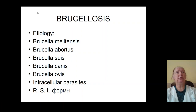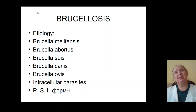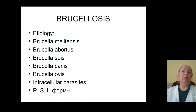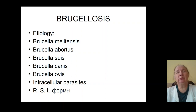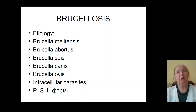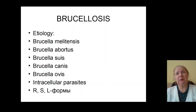Good afternoon, colleagues. The lecture today is about Brucellosis. Brucellosis is an infectious disease caused by Brucella, and sources of infection are agricultural animals. Infection is characterized by increasing temperature, formation and destruction of joints, formation of visceral forms of infection, and formation of prolonged, progradient, and chronic forms of infection.